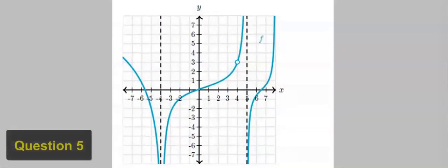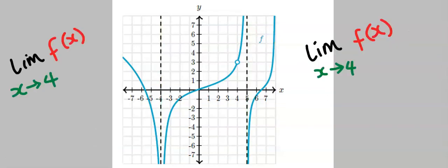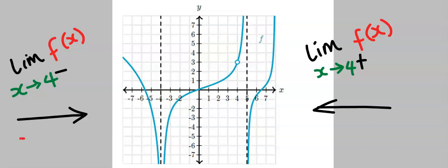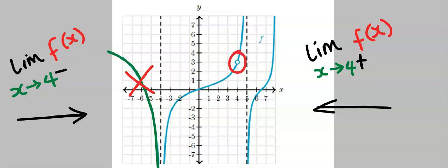Next, let's consider this question. This function f(x) contains lines of asymptotes. Approaching from the left, we ignore the asymptote lines since they come from infinity and go towards infinity. We consider only the line that contains a hole which aligns with x = 4, and this hole corresponds to 3 on the y-axis. Hence the limit of f(x) as x tends to 4 from the left-hand side is equal to 3.